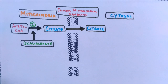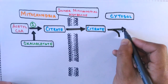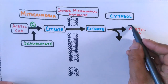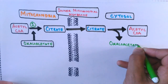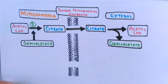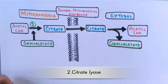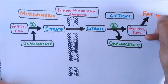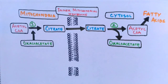After citrate crosses the inner mitochondrial membrane into the cytosol, it reacts with cytosolic CoA in the presence of ATP and is cleaved into acetyl coenzyme A and oxaloacetate. This reaction is catalyzed by citrate lyase, a cleaving enzyme. The acetyl coenzyme A is then used for fatty acid biosynthesis, while the oxaloacetate needs to be transported back into the mitochondria — but it cannot cross the membrane directly.